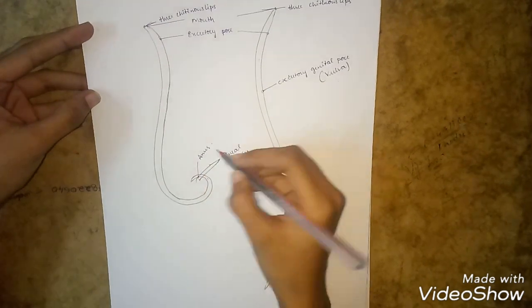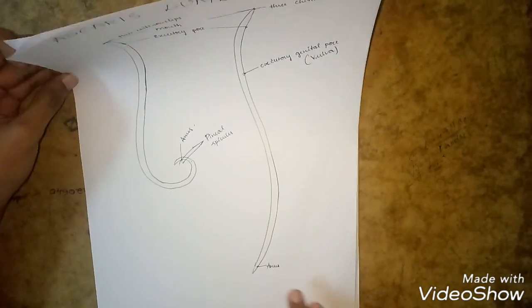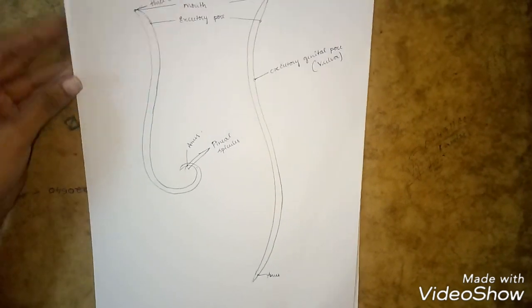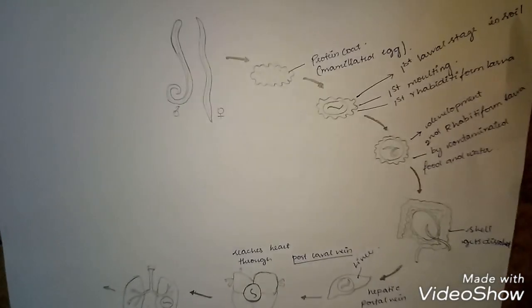These are near the anus, which has a pore at the posterior side. Now, let us discuss the life cycle of Ascaris lumbricoides.